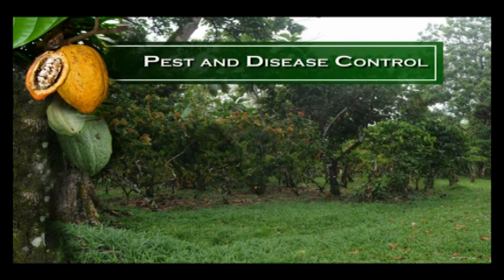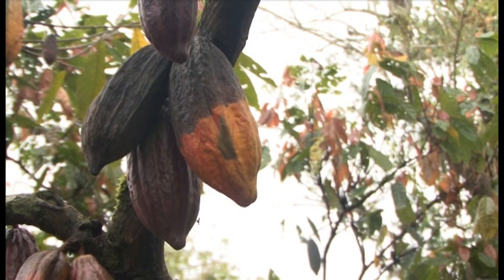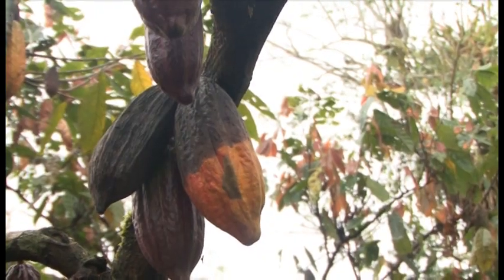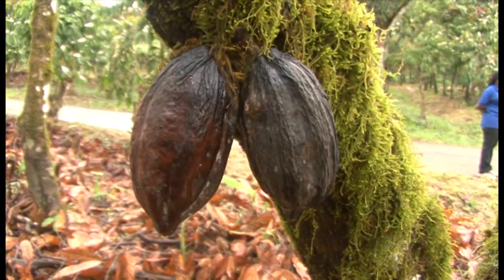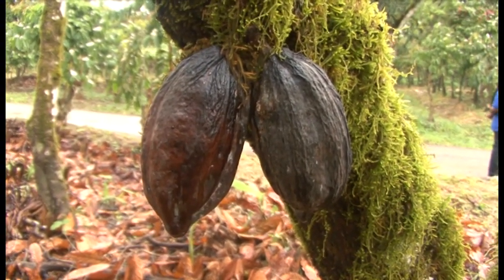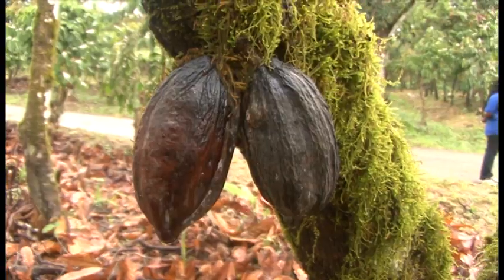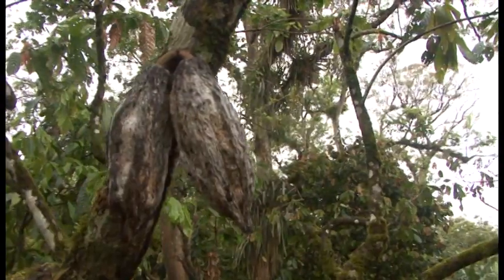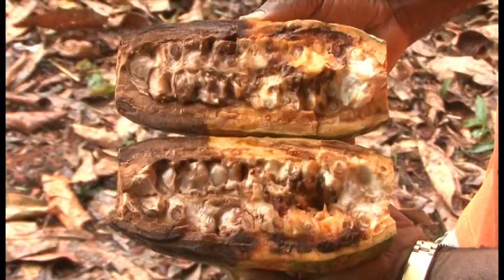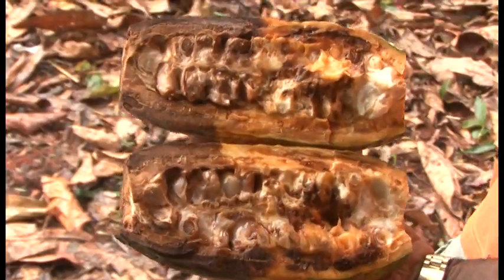Pest and Disease Control. The most serious disease affecting cocoa in Trinidad and Tobago is the black pod disease. It is a fungal disease which affects cocoa pods at all stages of development. It attacks and kills the pod.